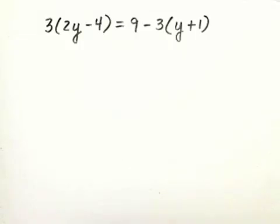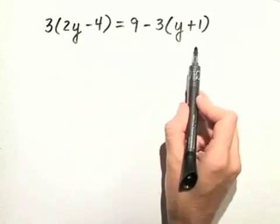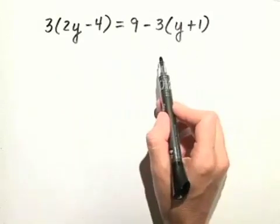Let's solve the linear equation. The first thing we need to do is clear the parentheses on both sides of this equation, and then we'll combine some like terms.